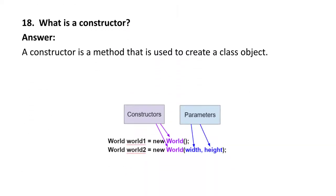Next question: what is a constructor? A constructor is a method that is used to create a class object. For example, 'world' is a constructor and its parameters are width and height. So a constructor is a method used to create a class object.